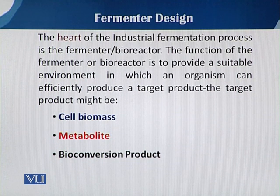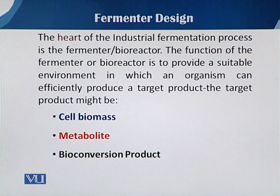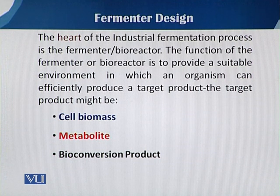What are our target products? When we discuss the range of different products by fermentation process, we classify five different ranges of fermentation, but here we are only mentioning three major ones: cell mass production, metabolite production, and bioconversion products. The fermenter has a vital role in all of these.